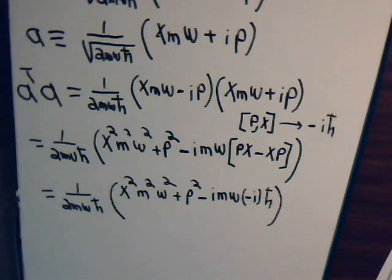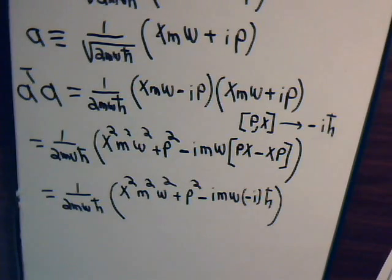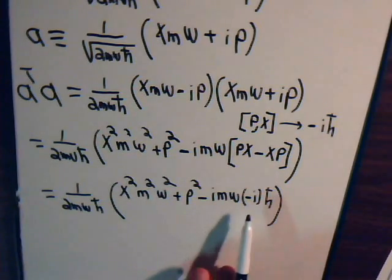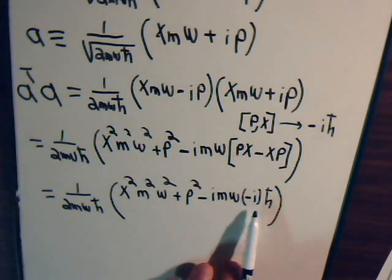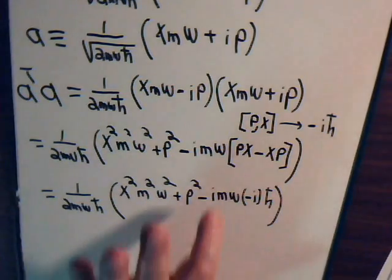And this quantity right here is minus i times minus i h bar. So, let's see. This is i squared. That's negative 1.